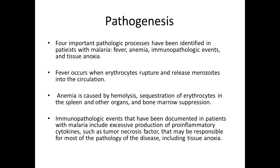Four important pathologic processes have been identified in patients with malaria: fever, anemia, immunopathological events, and tissue hypoxia. Fever occurs when erythrocytes rupture and release merozoites into the circulation. Anemia occurs due to hemolysis, sequestration of erythrocytes in the spleen and other organs, and bone marrow suppression.